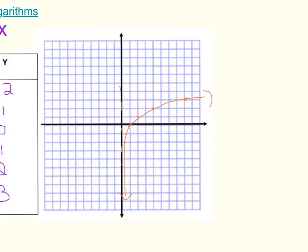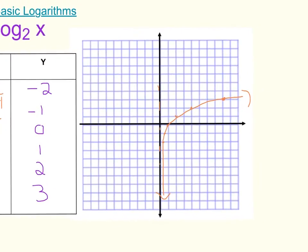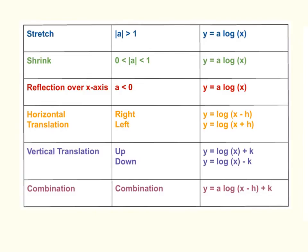So now we're going to make changes in this equation and see how they affect the graph. Here I have a chart you might want to refer to — the different manipulations to the equation that result in different types of translations. If you have a coefficient in front of the logarithm, it might stretch it, shrink it, or reflect it over the x-axis depending on the value of a. If it's greater than 1, it will stretch. If it's between 0 and 1, it will shrink. And if it's negative, it will reflect over the x-axis.